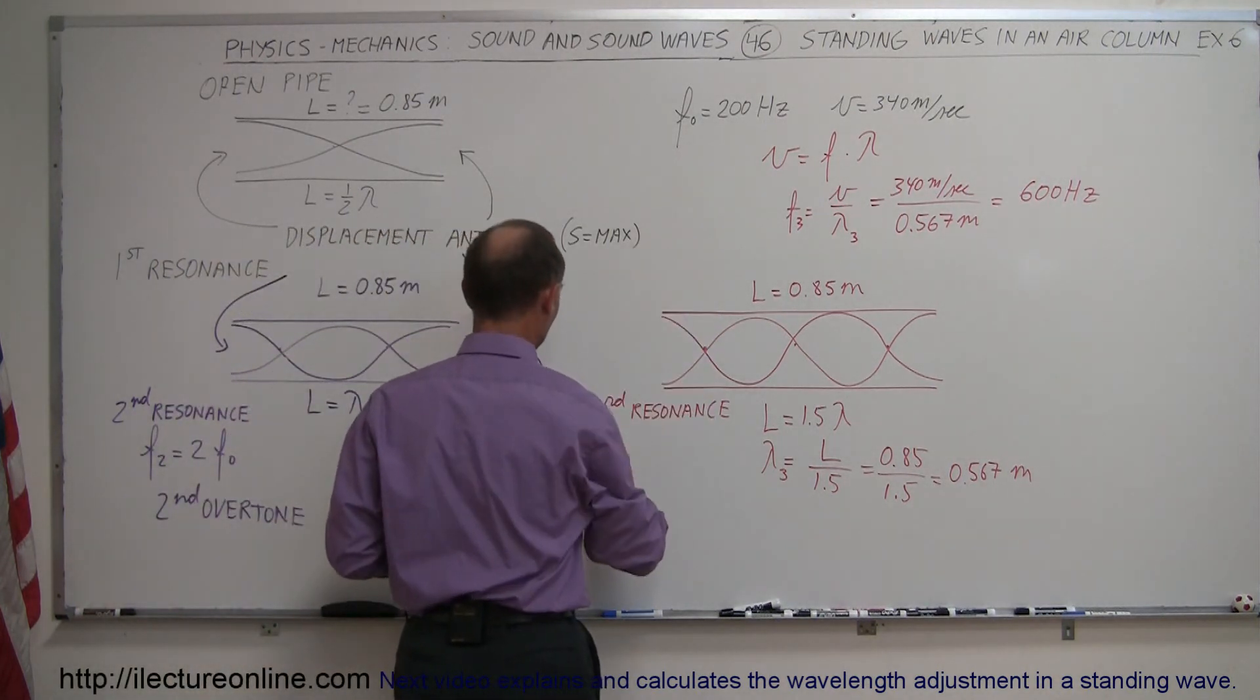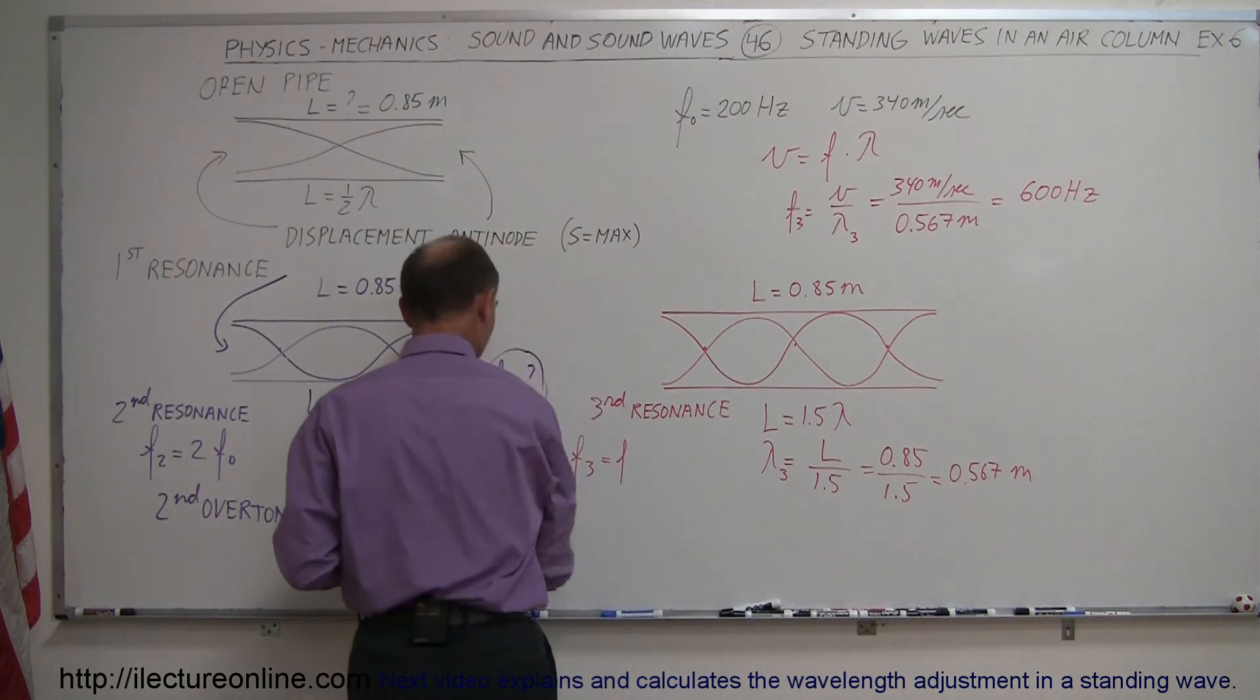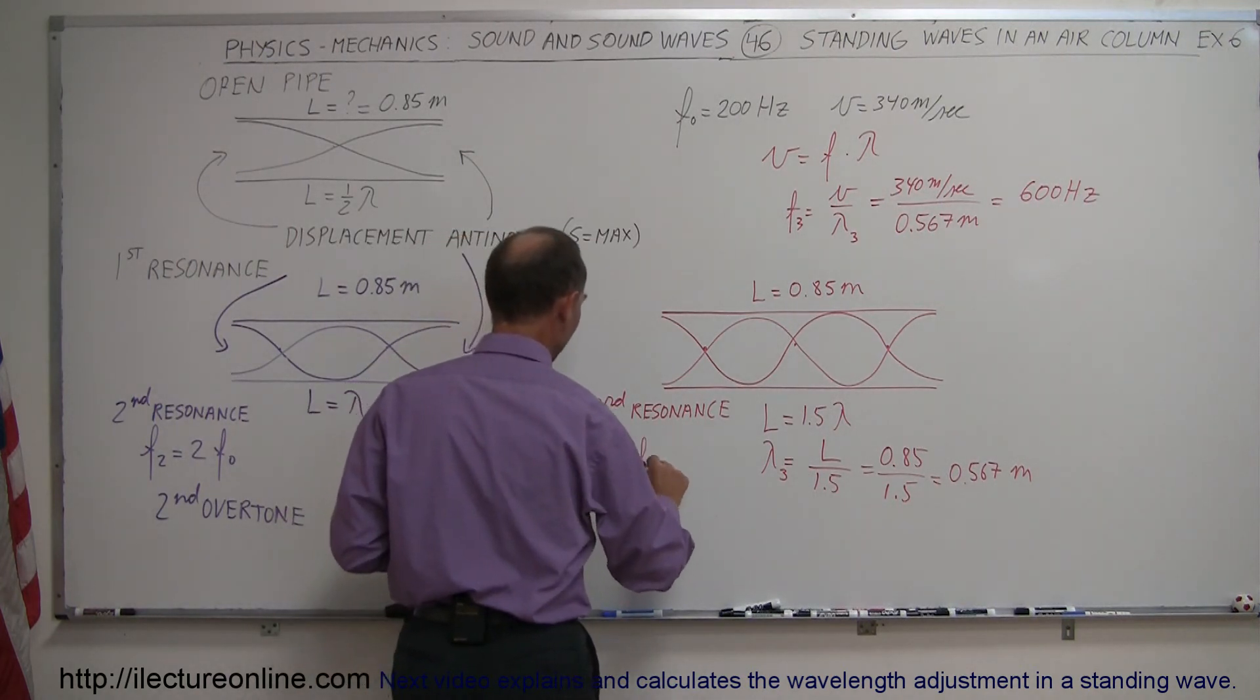So that means that the third resonance frequency is 3 times the base resonance frequency. The frequency of the third resonance is equal to 3 times the frequency of the base or first resonance, which is 3 times F sub 0.